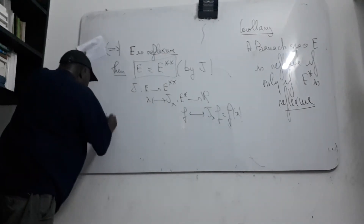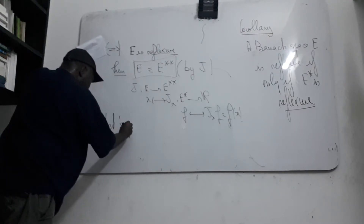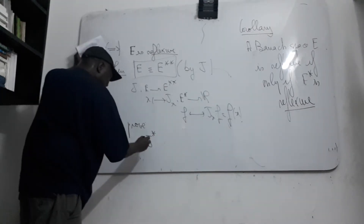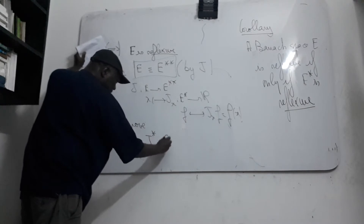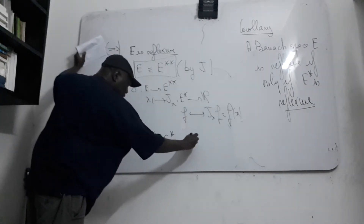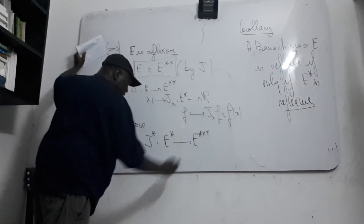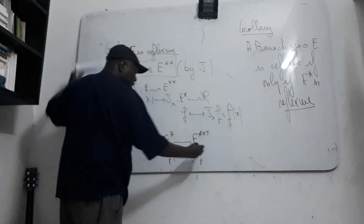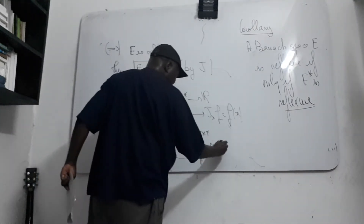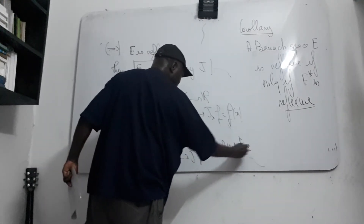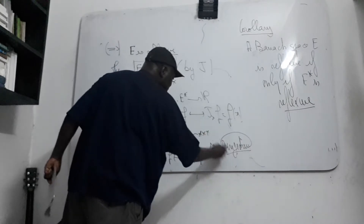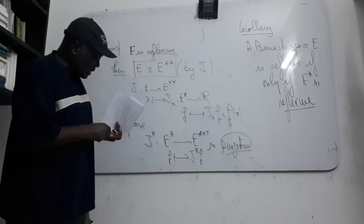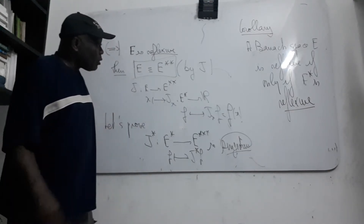Let us prove that the map is bijective. We have G(x) of f, mapping from E into E**. This map is also injective. It is surjective, which means that we can identify E with E** and say that E* is also reflexive.